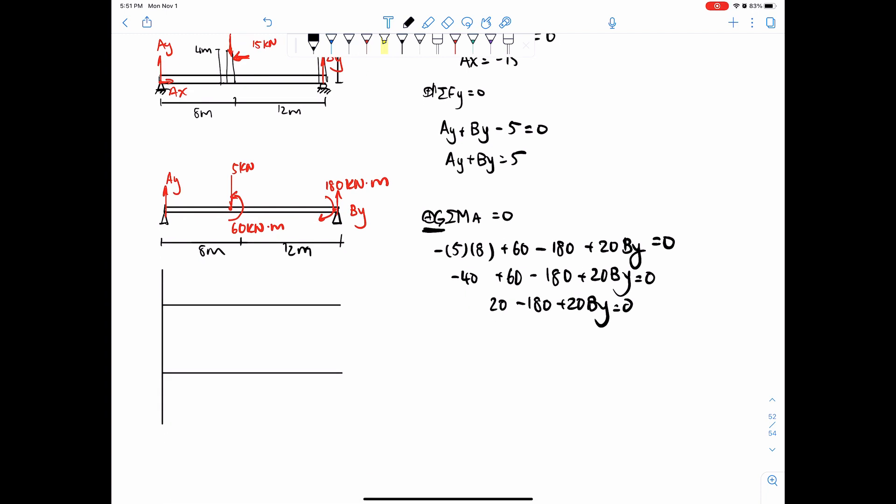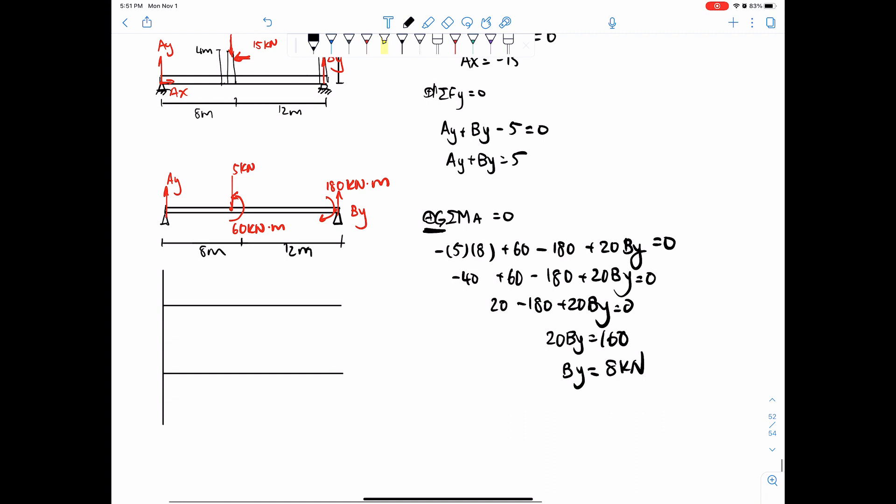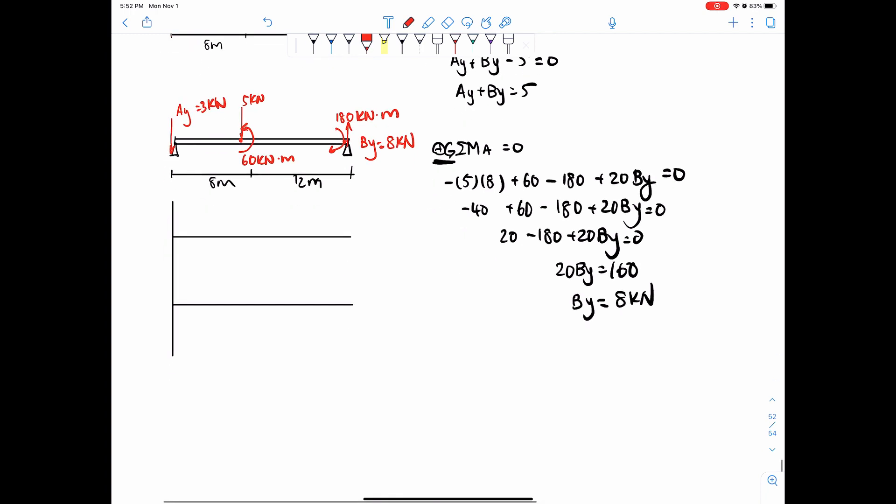And then that would equal to 20 By equals 160, and then By would equals 8 kilonewtons going up. I could have just plugged that into my calculator, but for some reason, I had a brain fart. And if this is 8 kilonewtons going up, by sum of forces, we can see that Ay is actually negative. It's 3 kilonewtons going down. So once we have that, we can just go ahead and draw shear force and bending moment diagrams.